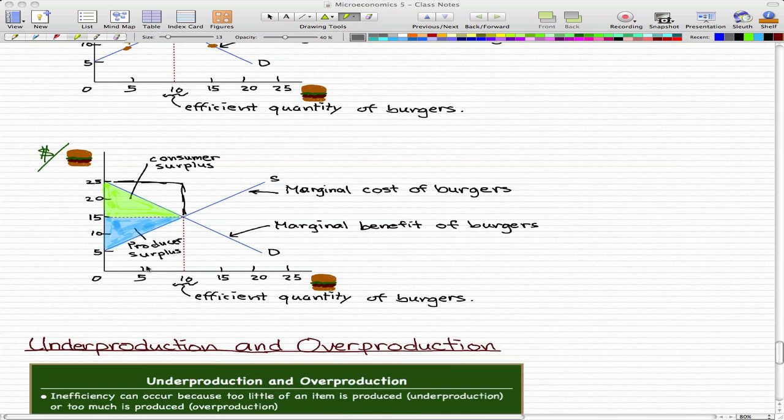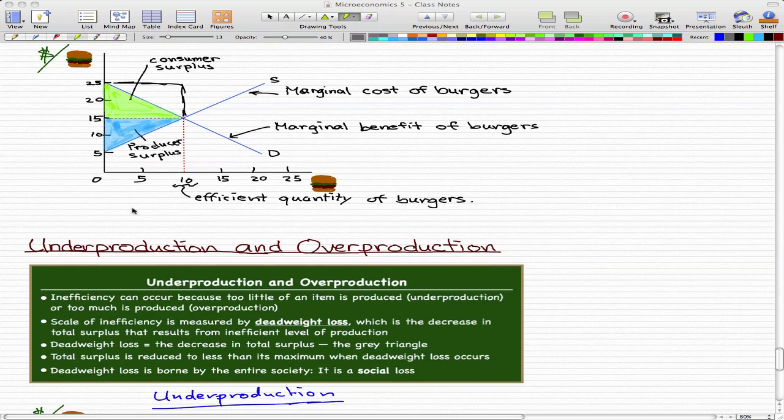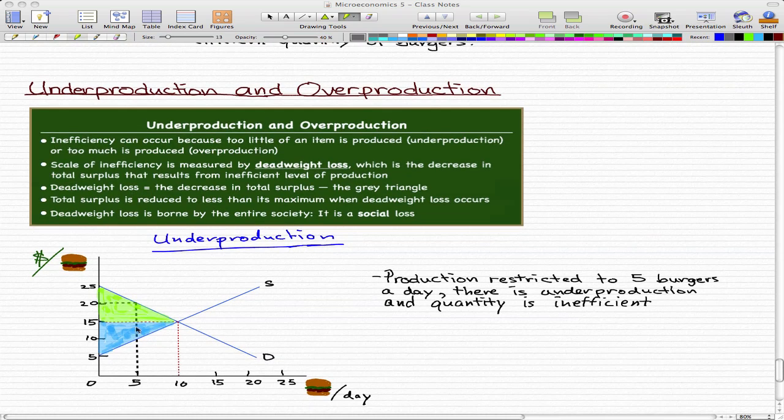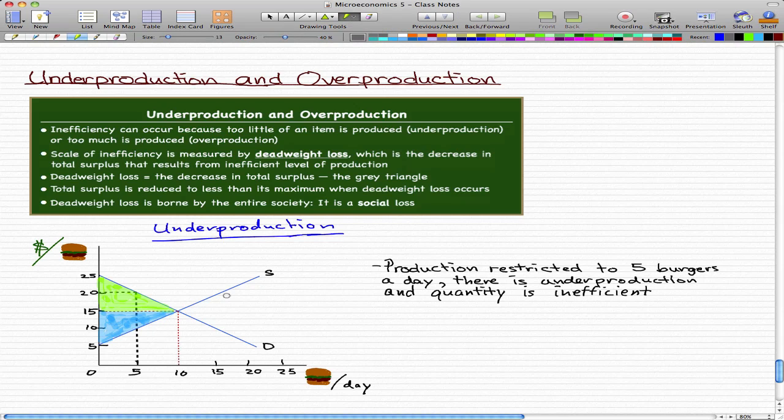Now, I've gone through something like this with you guys before, and I think I went through it with you guys in this graph very briefly, but this will be more in-depth. So here you see that I have already drawn a dotted line for the restriction down to five burgers. This is underproduction, there is an inefficient amount of quantity.